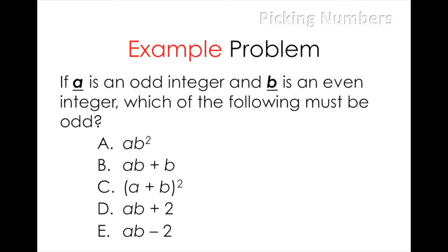After reading the question, I know that A must be odd and B must be even. So following my picking number rules, I'll choose three for A and four for B.